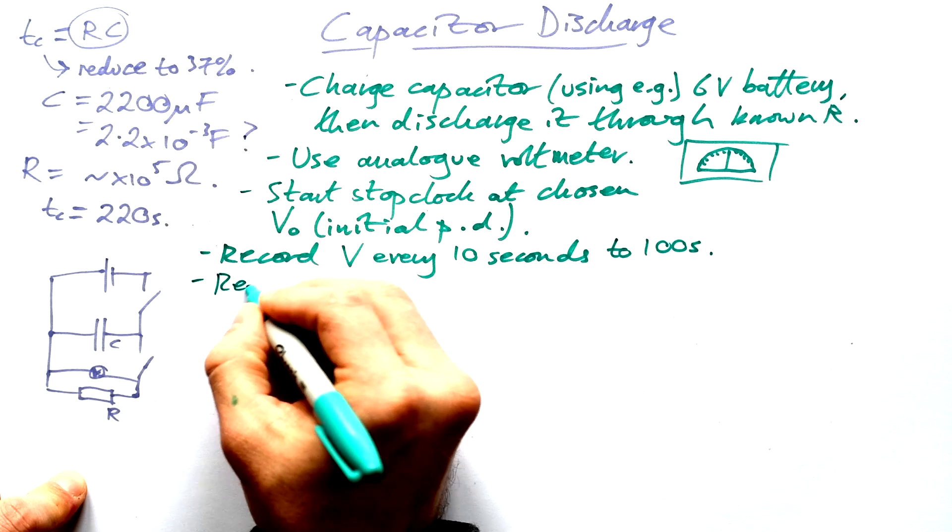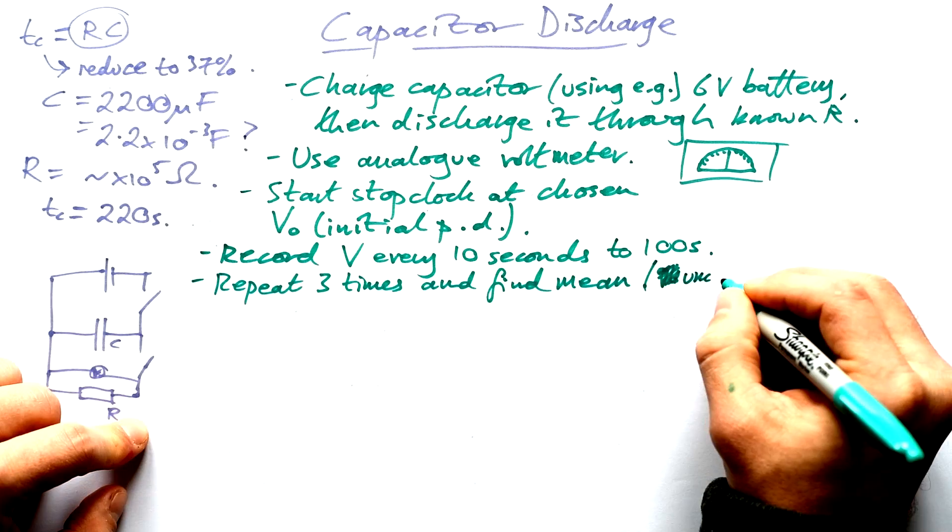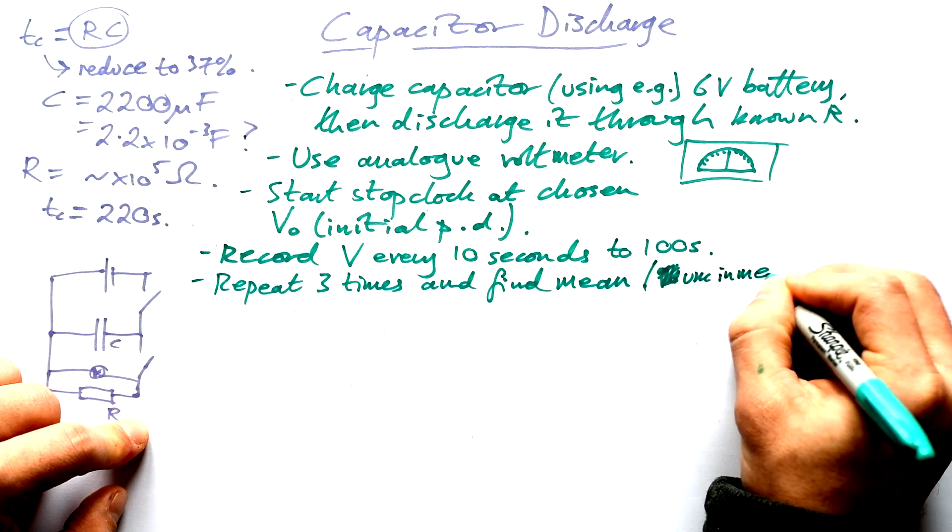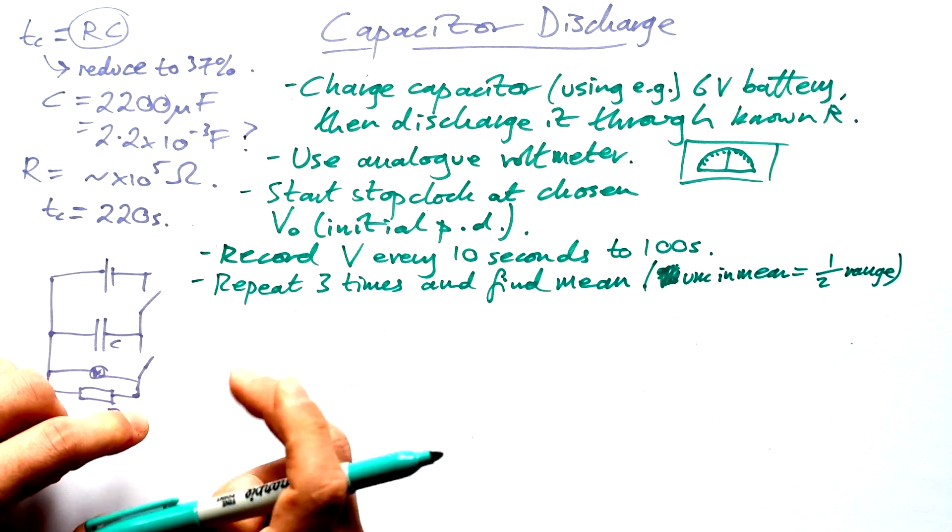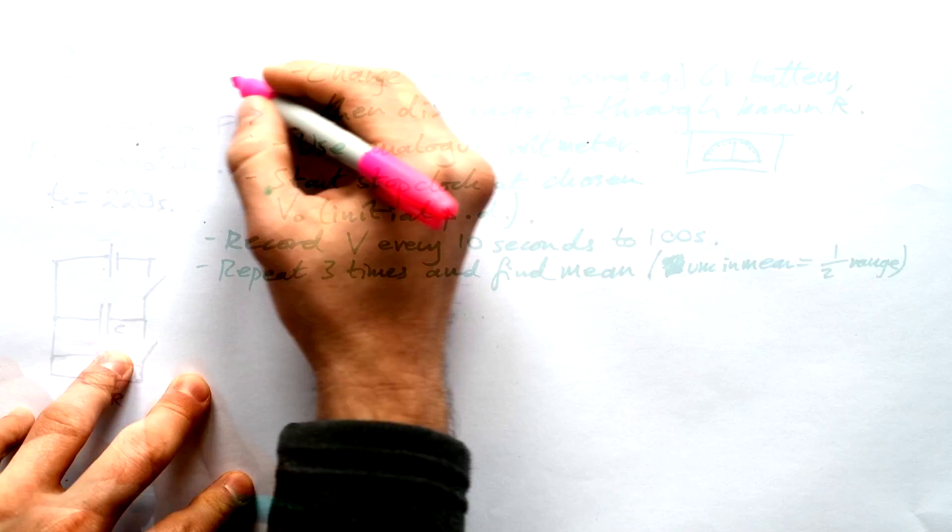We're going to repeat it three times and find the mean. Your uncertainty in the mean is going to be half the range. That's something you can talk about when you're doing your analysis.